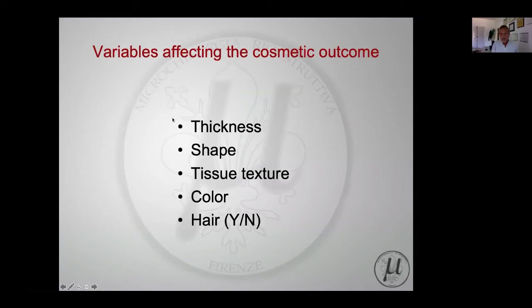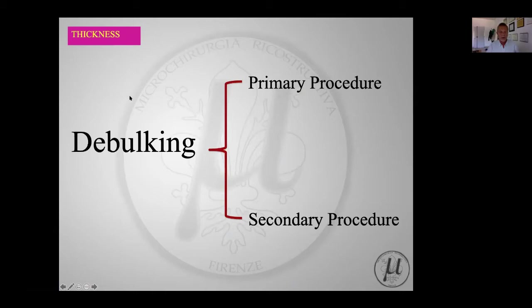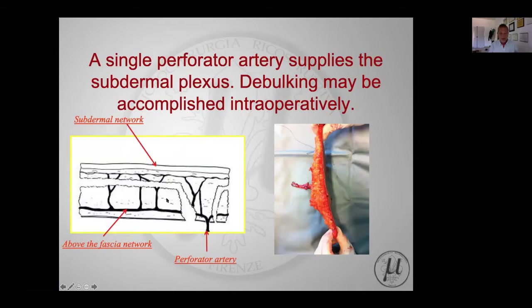There are some variables which affect the cosmetic outcome of our flaps. We cannot do anything about tissue texture or color, but we can work on thickness and shape. Thickness is a very important point, considering that our flaps are often in articular areas where we need thinner, more pliable skin. Debulking can be done as a primary or secondary procedure.